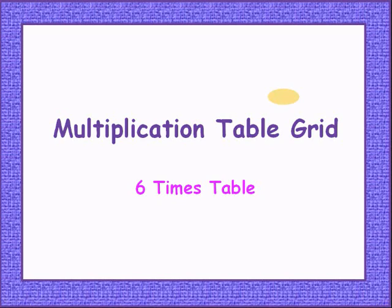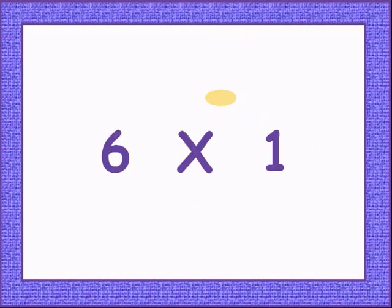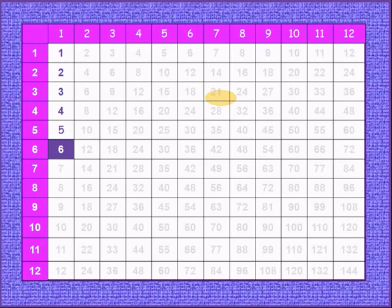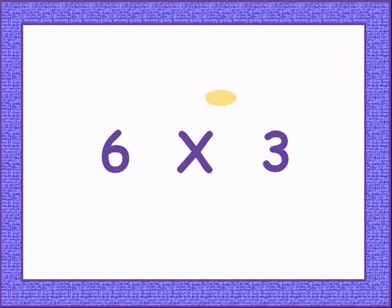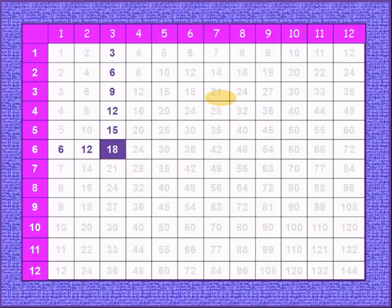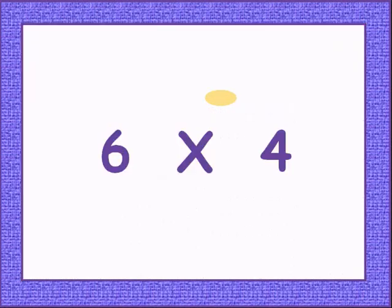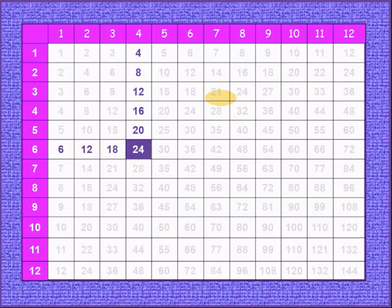Let's start our 6 times table. 6 times 1 gives 6. Adding 6, 6 times 2 gives 12. Adding 6, 6 times 3 gives 18. Adding 6, 6 times 4 gives 24.